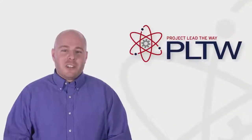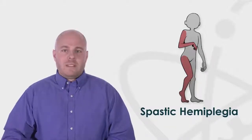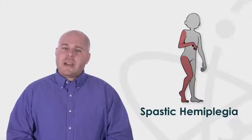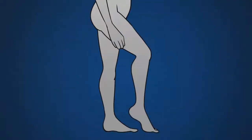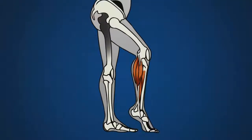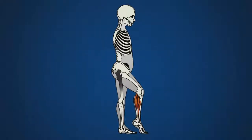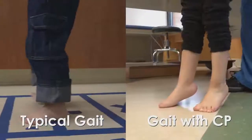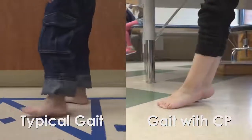For this instant design challenge, your patients have what is called spastic hemiplegia. This means that they have stiff muscles, or spasticity, in one side of their body. Usually their arm is more affected than their leg. In the case of your patients, the muscles in the back of their affected legs are tight and contracted, causing an abnormal foot position and stance.